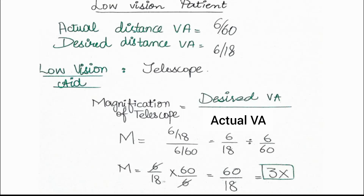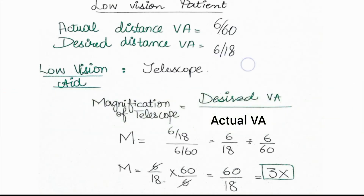To find what magnification the telescope should have for a patient whose real acuity is 6/60 and who wants to read the 6/18 letter, we use the formula: M = desired real acuity ÷ actual real acuity. So M = (6/18) ÷ (6/60). Calculating this mathematically, you obtain 3x.